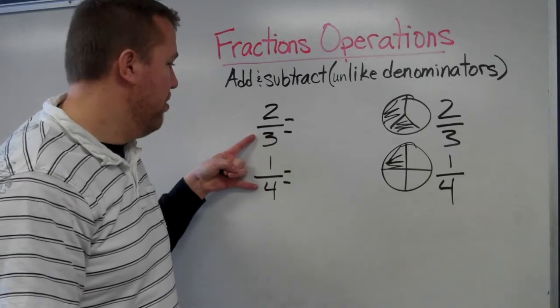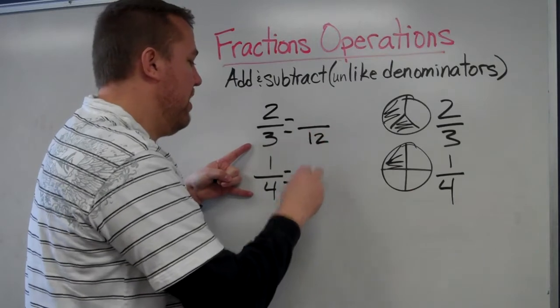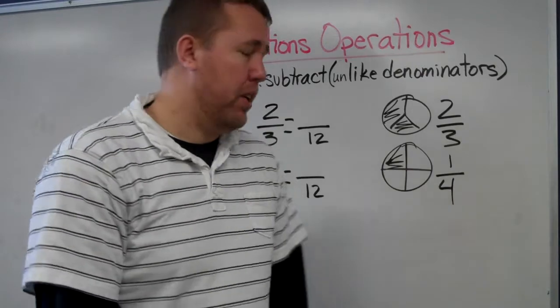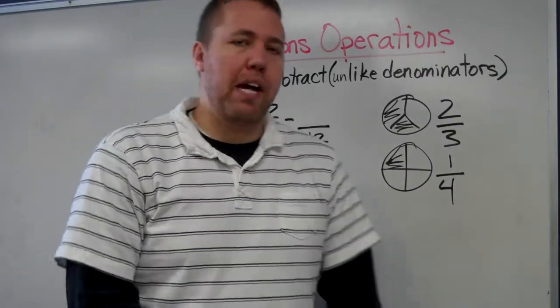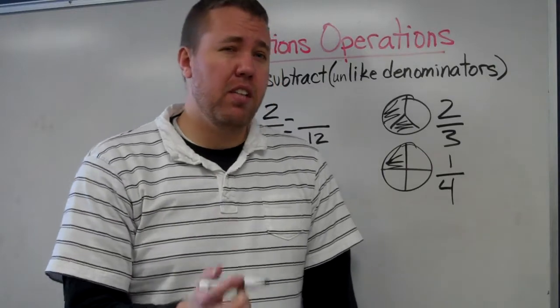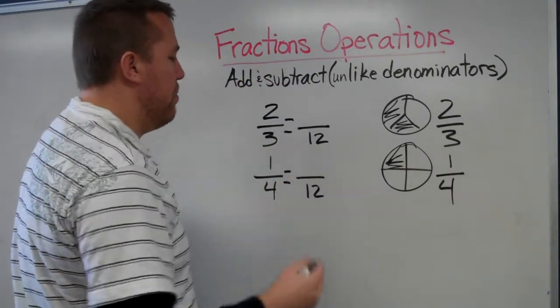Since that equals twelve, both three and four go into it. That's a quick tip. Look back to the least common multiple and least common denominator lesson to list those multiples and find the smallest one.